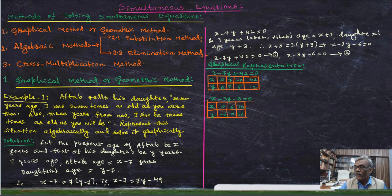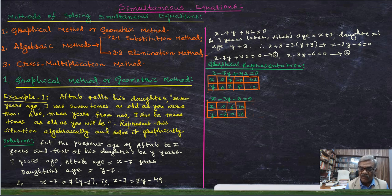For equation 1, X minus 7Y plus 42 equals 0, we have the following values: when X equals 0, Y equals 6; when X equals 7, Y equals 7; when X equals minus 7, Y equals 5; and when X equals 42, Y equals 12. For equation 2, X minus 3Y minus 6 equals 0: when X equals 6, Y equals 0; and when X equals 42, Y equals 12.